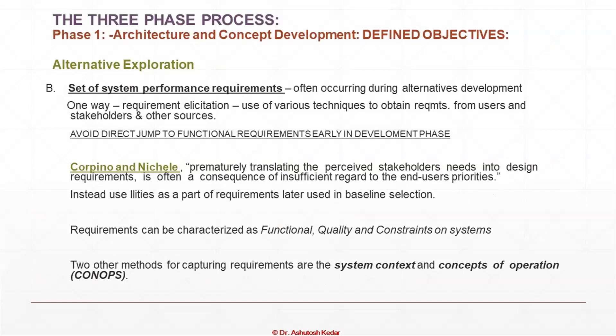Setting system performance requirements uses requirement elicitation techniques to obtain requirements from users and stakeholders. It is always advised to avoid a direct jump to functional requirements early in the development phase. You should have complete elicitation discussion with users and stakeholders before generating functional requirements. As quoted, prematurely translating perceived stakeholder needs into design requirements is often a consequence of insufficient regard to end user priorities. Requirements can be characterized in three types: functional requirements, quality requirements, and constraint requirements.